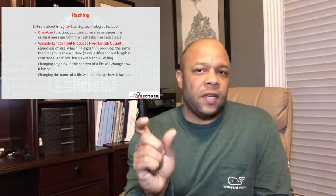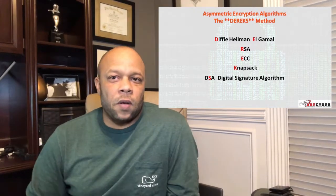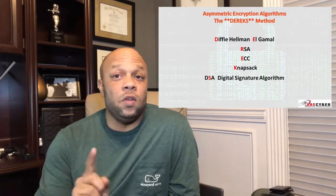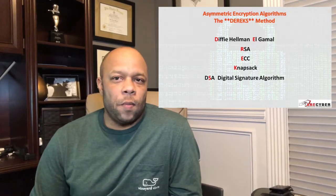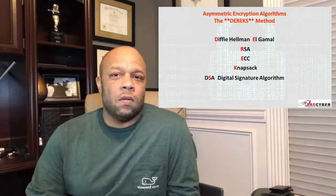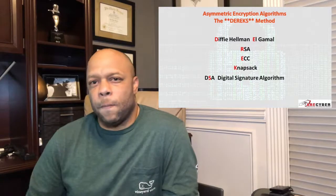The different algorithms you'll need to be familiar with on both the asymmetric and symmetric sides can be easily remembered. For the asymmetric side, simply remember the word DERRICKS: Diffie-Hellman, Elgamal, RSA, Elliptical Curve, Knapsack, and the Digital Signature Algorithm.